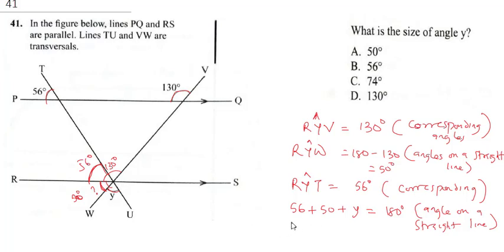you can now find 56 plus 50 is going to give us 106 plus Y, that's 180. Therefore our Y is going to give us 180 minus 106. And when you do the subtraction you are going to get 74 degree. And so your correct answer here is C. So I'll mark my C.